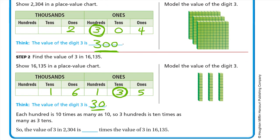So this is 300 and in the other number it is 30. Each hundred is ten times as many as ten. So 300 is ten times as many as 30. The value of the 3 in 2,304 (which is 300) is ten times the value of the 3 in 16,135 (which is 30).